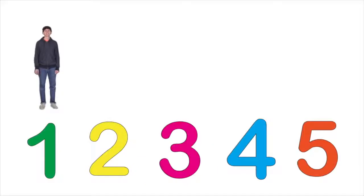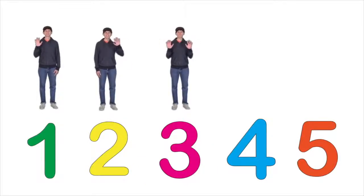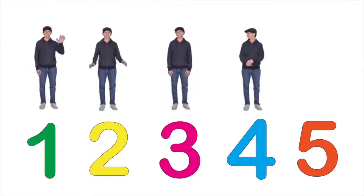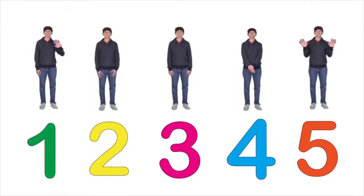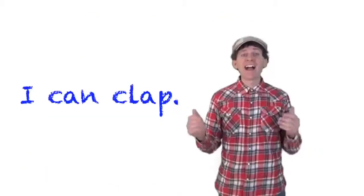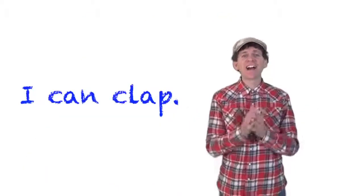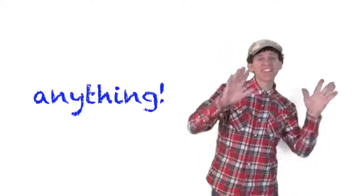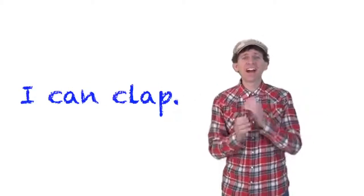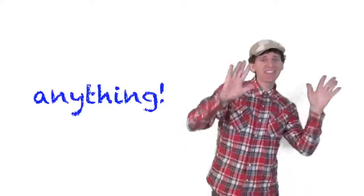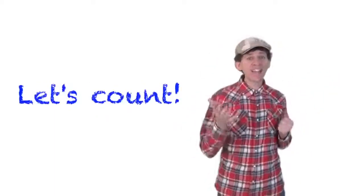One, two, three, four, five. Let's sing the counting animal song. I can clap. I can sing. I can do anything. I can clap. I can sing. I can do anything. Here we go. Let's count.